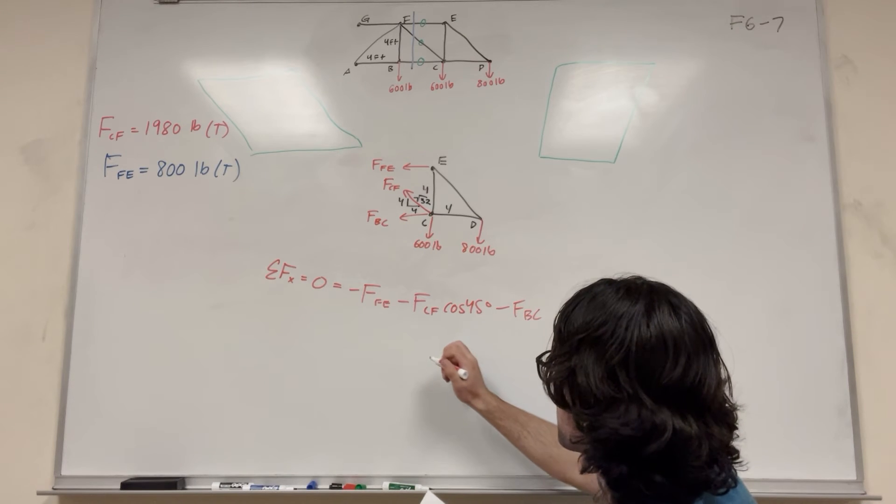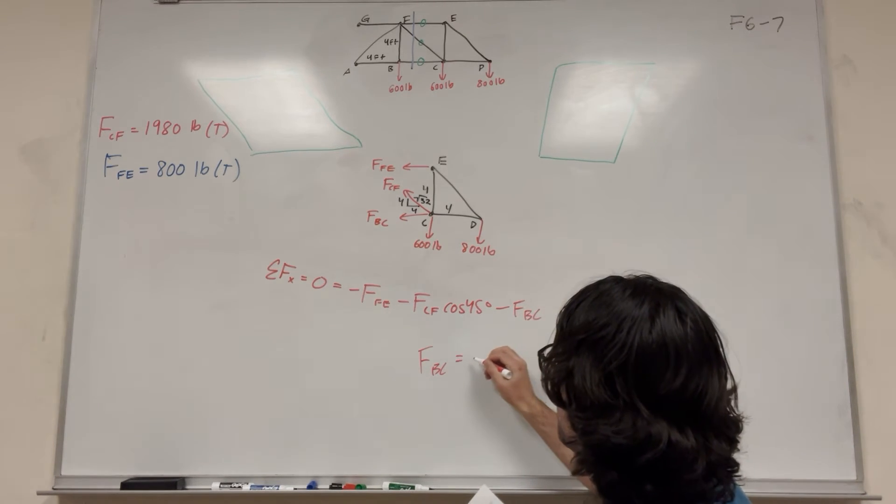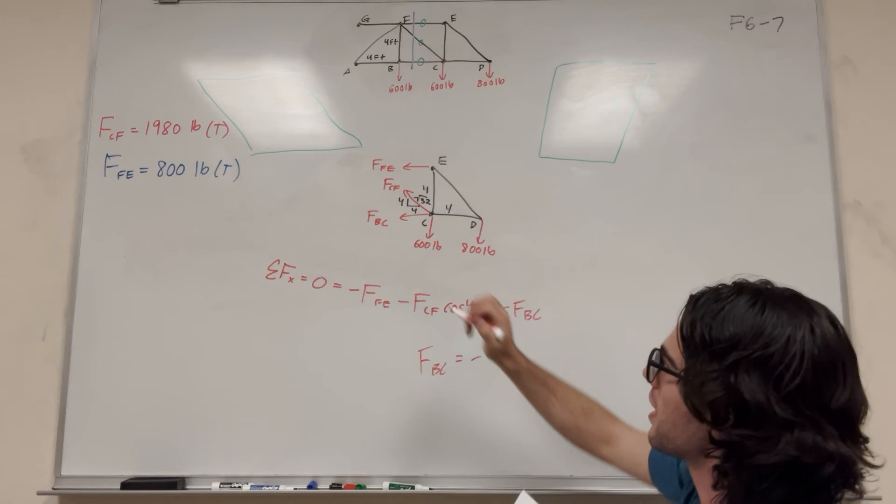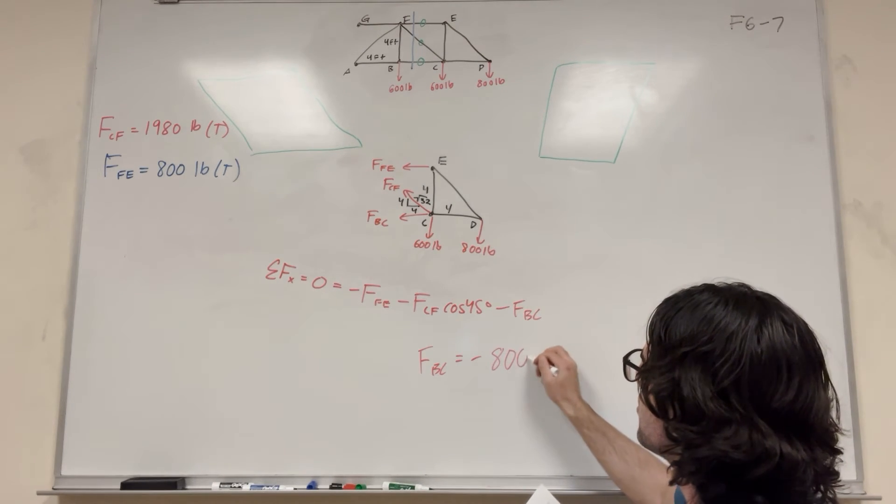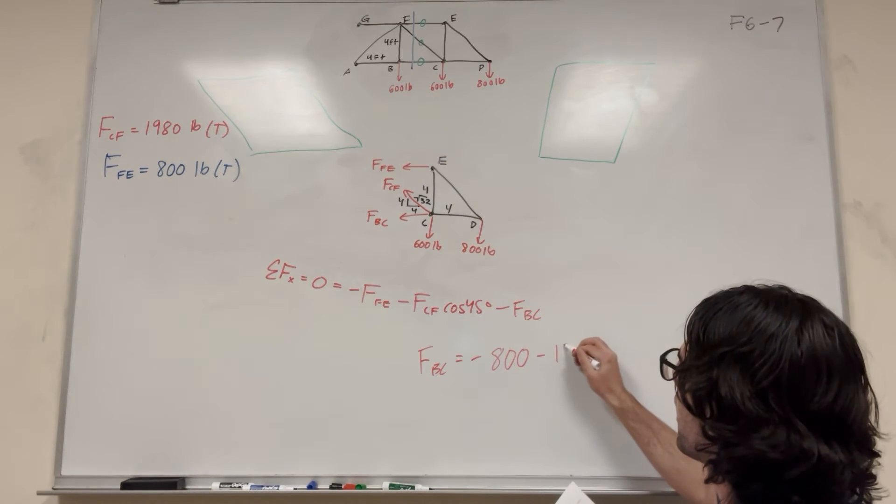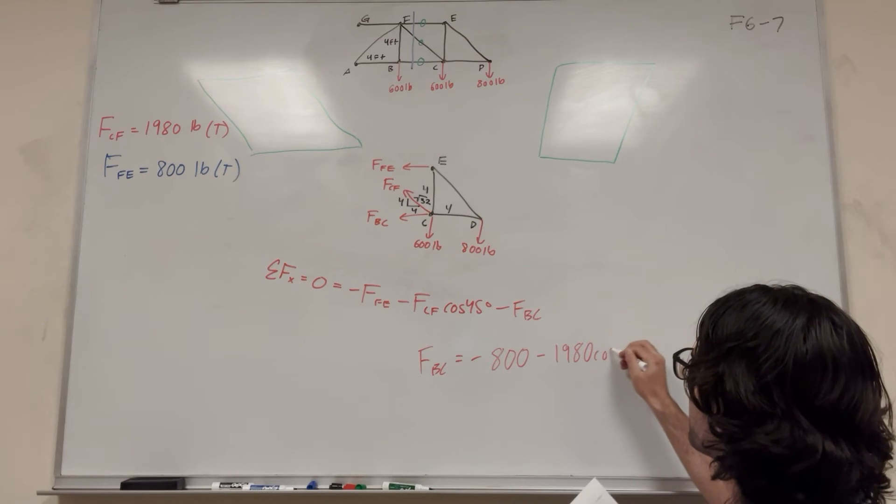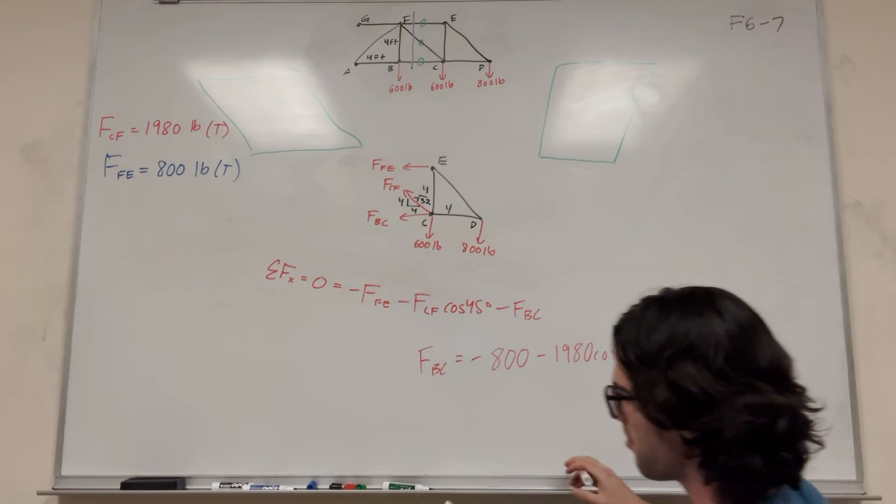So then, of course, we're looking for BC. So it's going to be FBC is equal to negative force FE, which said is 800. So here, minus FCF, 1980, cosine of 45. So if you do the math on this,